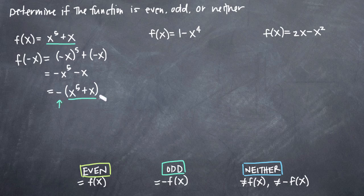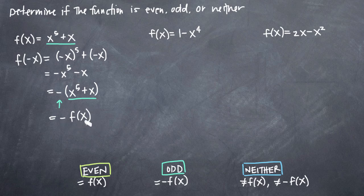As you can see, since we know that f of x is equal to x to the fifth plus x, we could just as easily substitute f of x for x to the fifth plus x, and you can see that we get negative f of x. That's exactly what we were looking for to determine that this is an odd function.